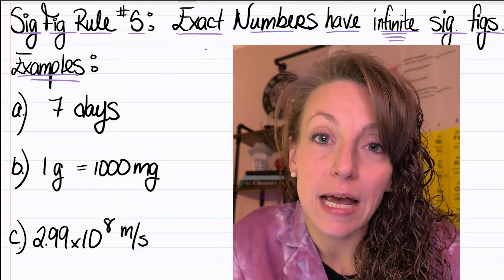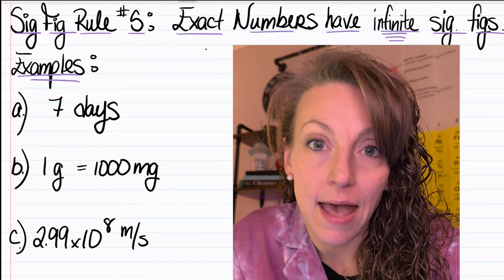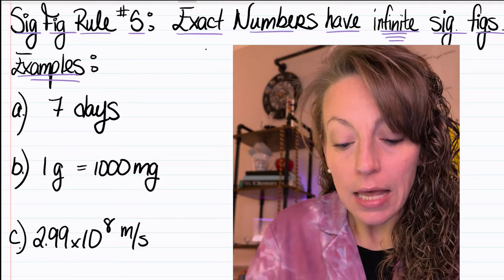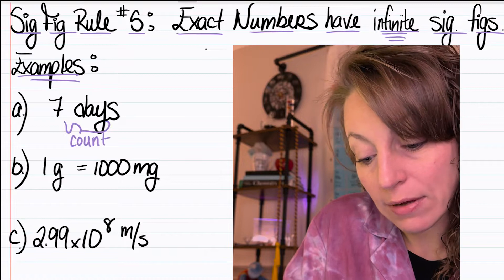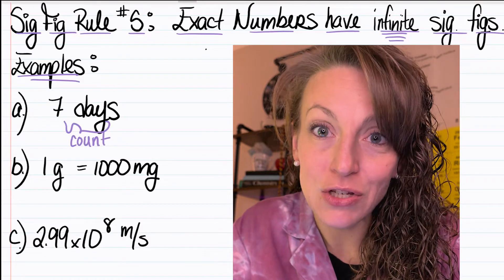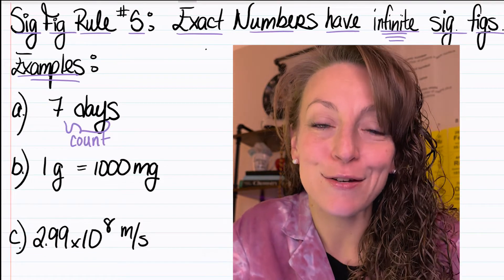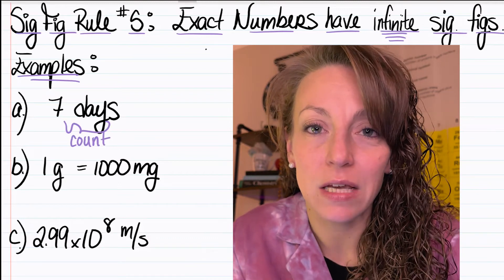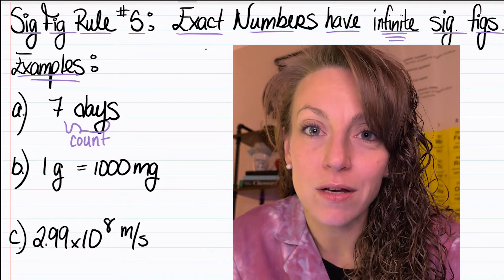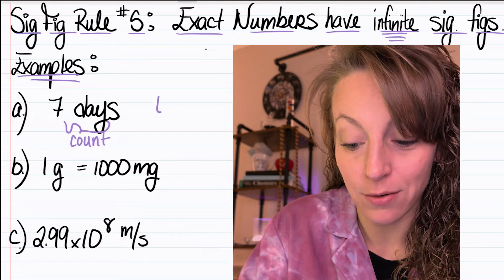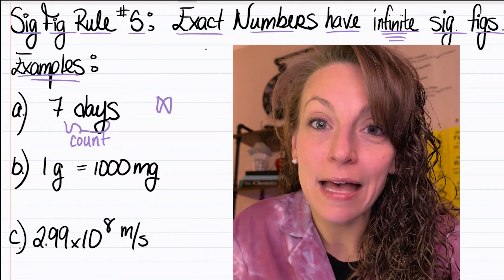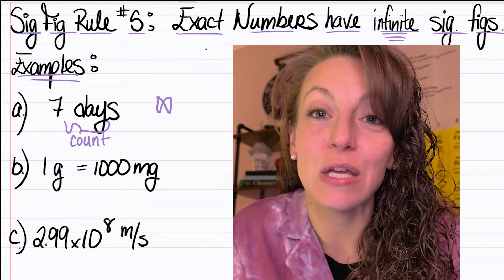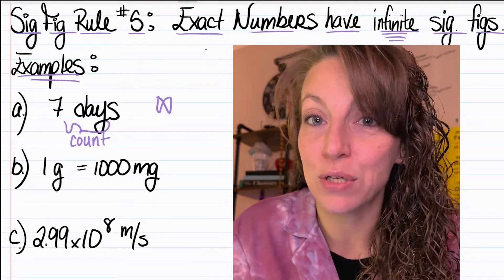Now, the first type of exact number is shown here in letter A. Seven days is what's known as a count. When you have a count of something in a calculation, it's always going to be considered to have the most number of sig figs out of all of the numbers in that calculation. In other words, it has infinite sig figs and will not affect the number of sig figs that you can have in the answer to that particular calculation.